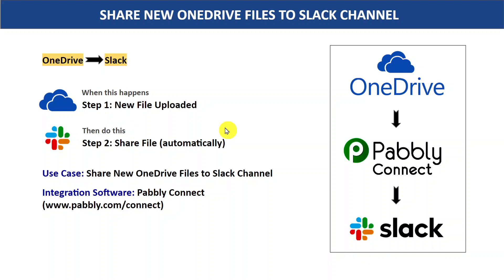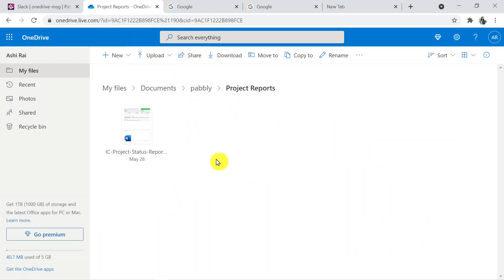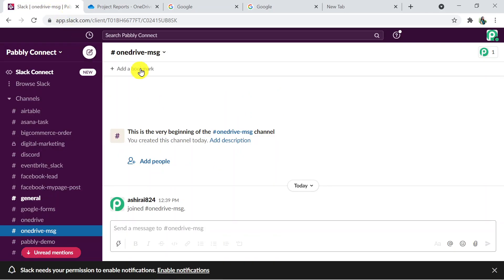The best part is this process requires no coding knowledge and any non-technical person can do this easily. So let's begin. This is my OneDrive account and this is my Slack account. This is the channel called 'OneDrive Message' where I want to share the file that I am uploading in OneDrive.